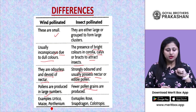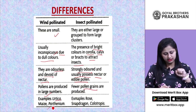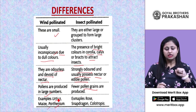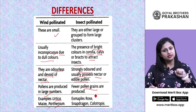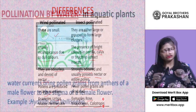Examples of wind-pollinated plants are artica, maize, and parthenium. Examples of insect-pollinated plants are rose, snapdragon, and calotropis.